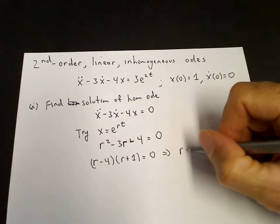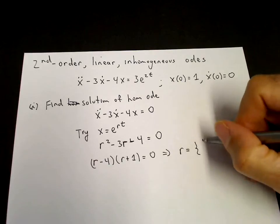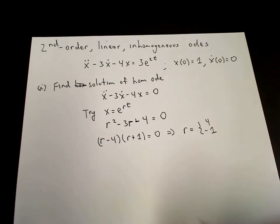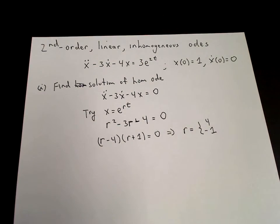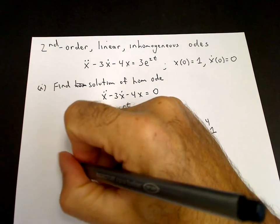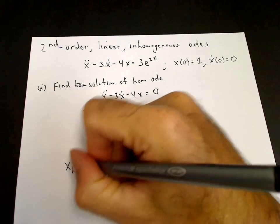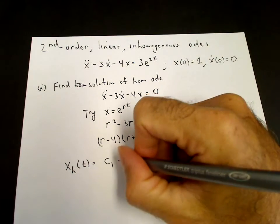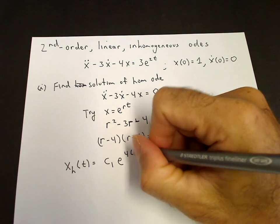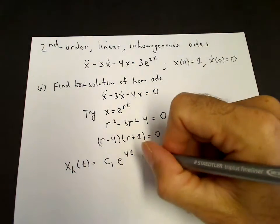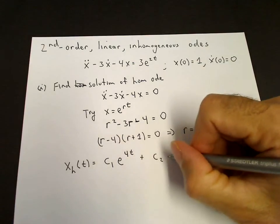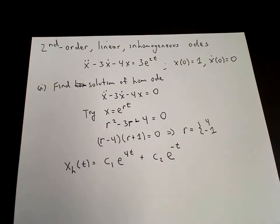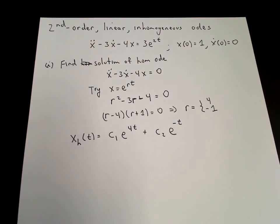So we have two roots: r equals 4 and r equals minus 1. We write down the general solution to the homogeneous equation: x sub h equals c1 times e to the 4t, since r1 equals 4, plus c2 times e to the minus t. That is the solution of the homogeneous equation.